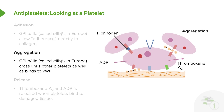The glycoprotein 2B3A molecule also allows platelets to adhere to other platelets. You can see there's another platelet attaching to the first platelet through fibrinogen. This cross-linking and activation of platelet adhesion and aggregation are important components of the glycoprotein 2B3A molecule.